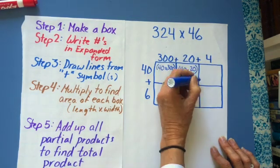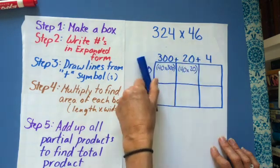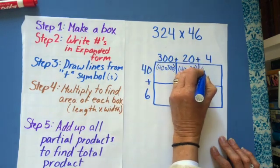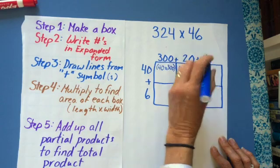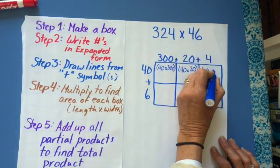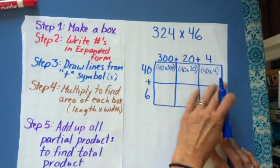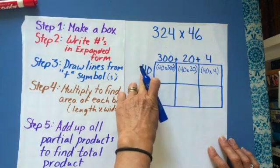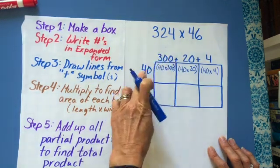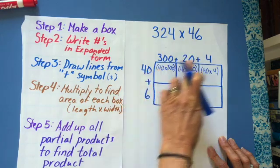Next box. I need to know the length of this side here, which is 40. And I need to know the length of this side, which is 4. Next box. So actually, if you look at this, what I've done is I've distributed the 40 to 300, to 20, and to 4.